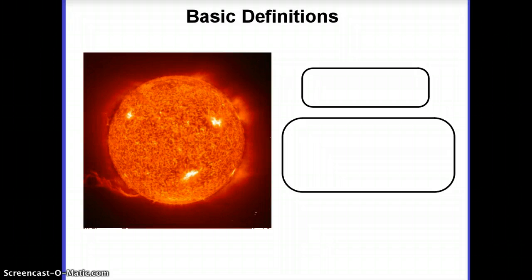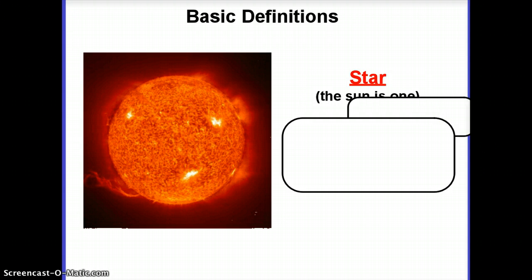This first picture is actually a picture of the sun taken from a spacecraft through a telescope that allows us to look safely at the sun. The sun is a star — hopefully we all know that, we learned that in elementary school. A star is the most fundamental object that we study in astronomy. Everything else is basically based off of the definition of a star.